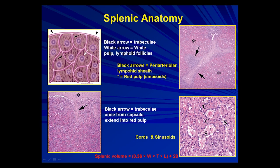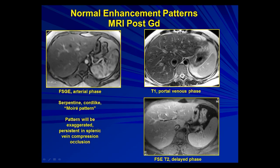The splenic anatomy in terms of microscopy: there's splenic red pulp and white pulp and sinusoidal spaces. It's the differential flow in the sinusoidal spaces in the red and white pulp that give the moiré pattern on the arterial phase of any contrast-enhanced scan, whether CT or MR. You can see this cord-like serpentine pattern — the moiré pattern — due to the differential flow between the red and white pulp.